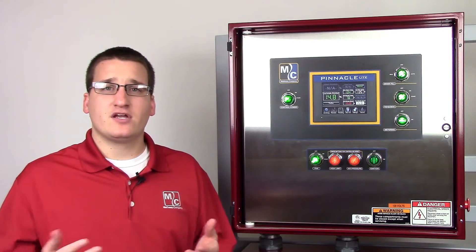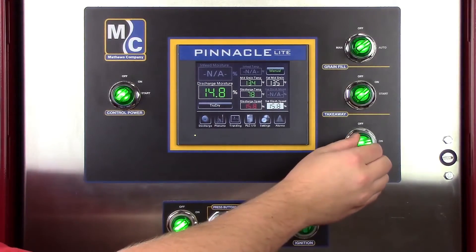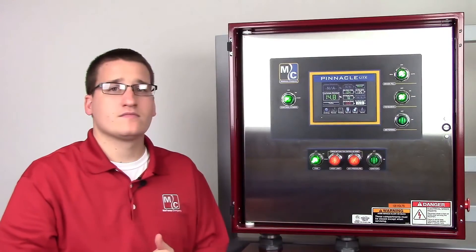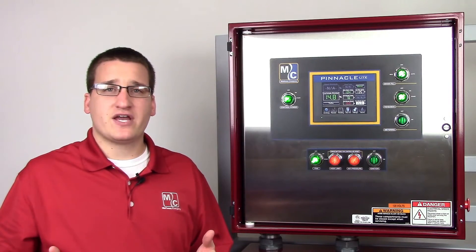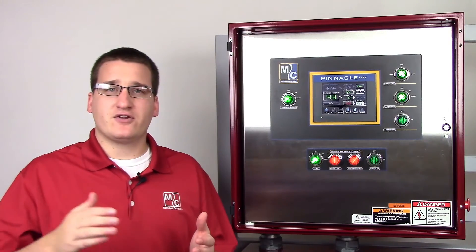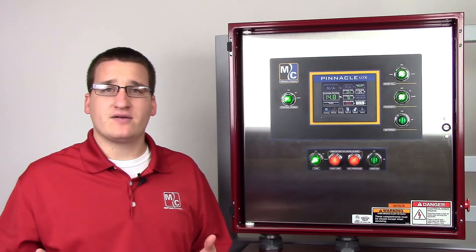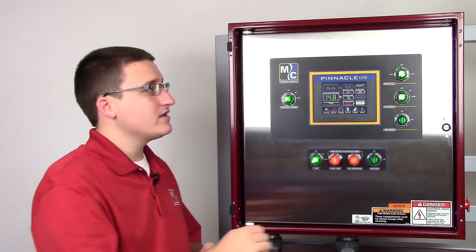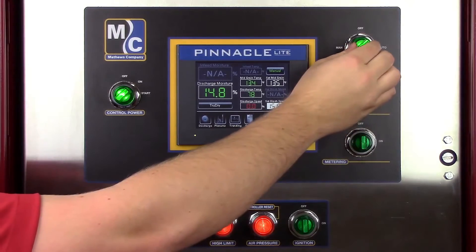At that point, you can turn off your metering. You'll want to leave your takeaway on for a few moments to let grain purge out, at which time you can turn off your takeaway and turn off your grain fill.